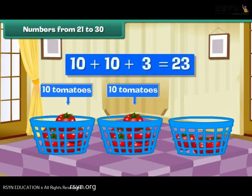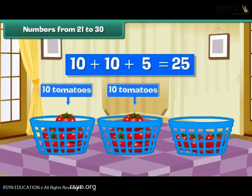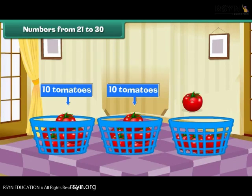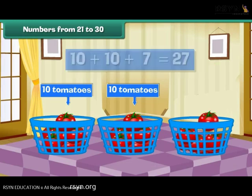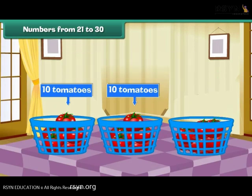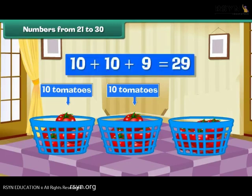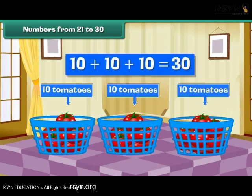Similarly, two tens and three make 23. Two tens and four make 24. Two tens and five make 25. Two tens and six make 26. Two tens and seven make 27. Two tens and eight make 28. Two tens and nine make 29. Two tens and ten make three tens — that is 30.